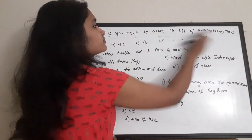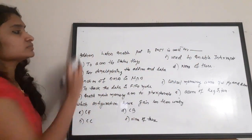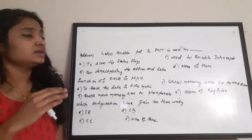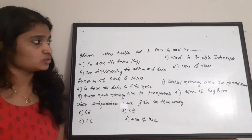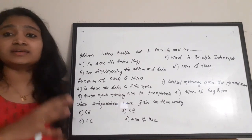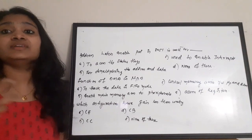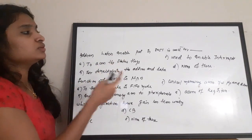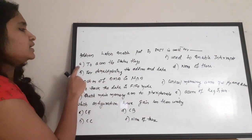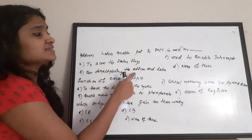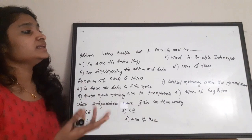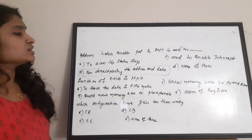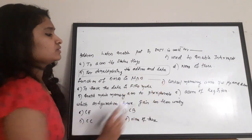Next question: the address/enable pin in 8051 is used for — A) access the status flag, B) demultiplexing address and data, C) enable interrupt, D) none of these. Port P0 in 8051 carries both address and data. The address/enable pin is used to differentiate whether the port is carrying an address or data. The correct answer is option B — demultiplexing address and data.